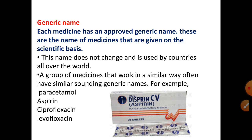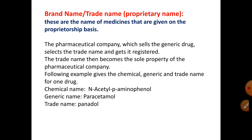Drugs that work in a similar way often have similar-sounding generic names. Medicines in the same pharmacological class share a similar generic name structure. For example, paracetamol, aspirin, levofloxacin, and ciprofloxacin are all generic names of medicines.